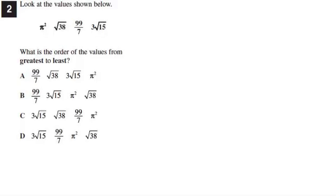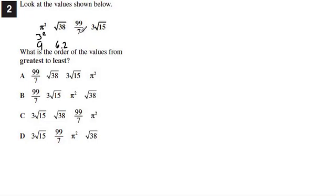Number 2: look at the values shown — pi squared, the square root of 38, 99 sevenths, and 3 times the square root of 15. To put these in order from greatest to least, we have to make them all the same. Pi squared is about 3.14 squared, which rounds to 3 squared, giving us about 9. The square root of 38 is close to the square root of 36, which is 6, so about 6.2. For 99 sevenths, converting to a mixed number: 7 goes into 99 fourteen times with 1 left over, so about 14 and 1 seventh. And 3 times the square root of 15 — the square root of 15 is close to 4 — so about 3 times 4, which is 12.